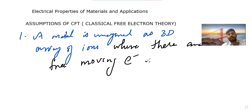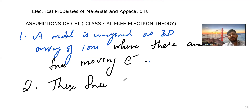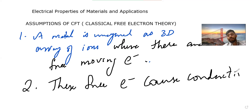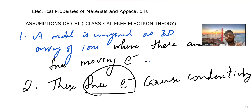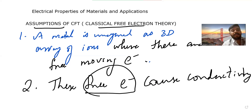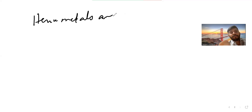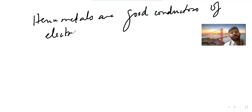The second point is that these free-moving electrons cause conduction. This is why metals are considered good conductors of electricity — because there are electrons which move. So the free electrons cause conductivity, hence metals are good conductors of electricity.